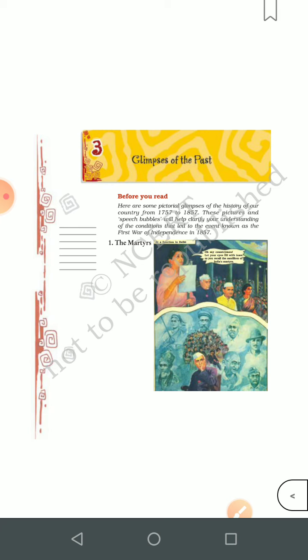Ram Mohan Roy — a learned social reformer from Bengal — understood what was going on in the country. He was a far-sighted person who predicted everything. A social reformer is a person who can change society. He called upon the people to feel proud of their ancient culture and not adopt British culture. He wanted society to get rid of silly superstitions.